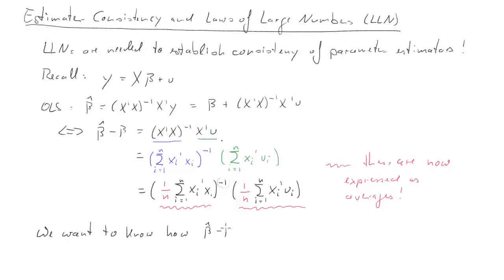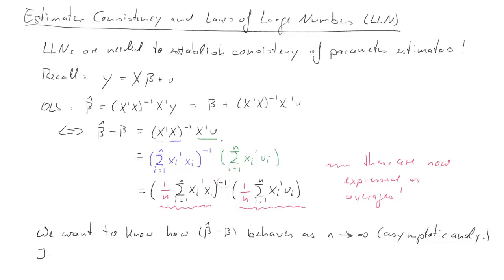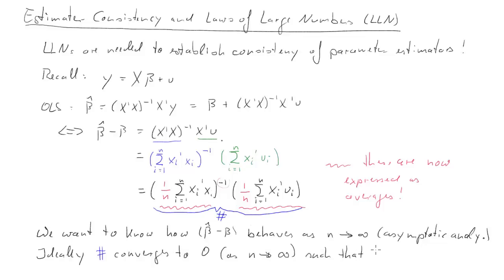What we really want to know is how the term beta-hat minus beta behaves as n goes to infinity — this is an asymptotic analysis. We are interested in beta-hat minus beta because that's the difference between the estimated parameter and the true but unknown beta, and what we are hoping for is that this converges to zero. The left-hand side will converge to zero if the right-hand side, the blue hash term, converges to zero as n goes to infinity, and if that's the case the distance between beta-hat and beta will also converge to zero.